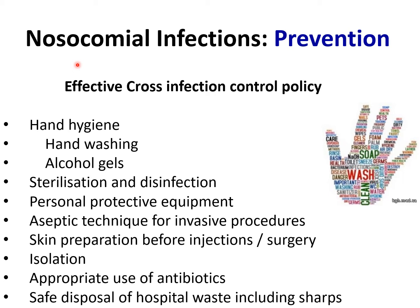The cornerstone of prevention of nosocomial infections is an effective cross-infection control policy in the hospital. Hand hygiene remains the most effective and universal measure to minimise the risk of cross infection, not only in hospital environments but in any environment, as we have experienced with the COVID-19 pandemic. Key measures include frequent hand washing and use of alcohol gels, appropriate sterilisation and disinfection of equipment and environments, use of appropriate personal protective equipment, aseptic technique for invasive procedures, skin preparation with antiseptics before injections or surgery, isolation of infected patients, and appropriate and judicious use of antibiotics.